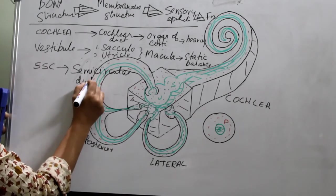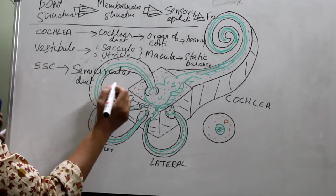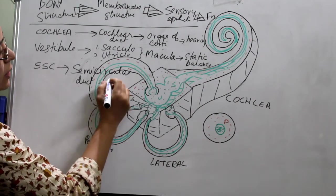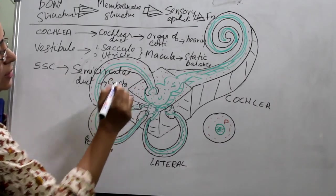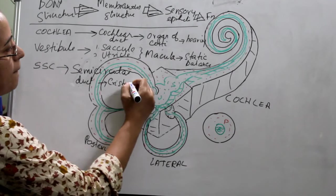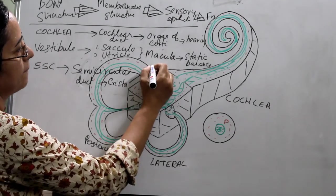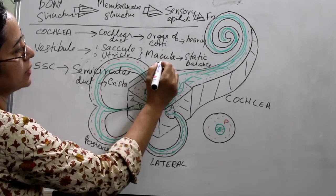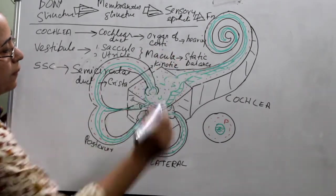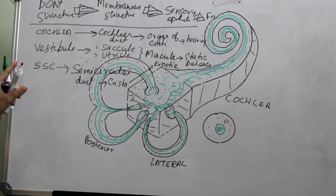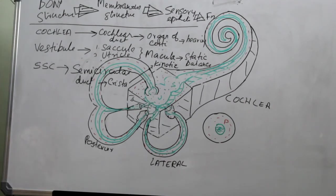The semicircular duct — and the sensory epithelium is the crista. And the function is kinetic balance — balance of motion. So that is about the labyrinth in general.